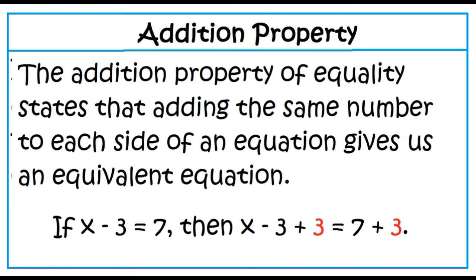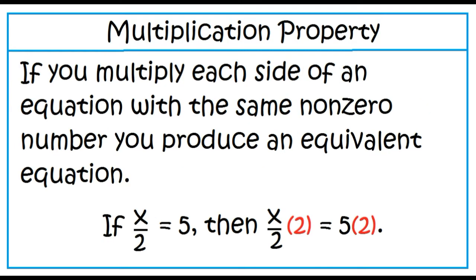The addition property of equality states that adding the same number to each side of an equation gives an equivalent equation. If x minus 3 equals 7, then x minus 3 plus 3 equals 7 plus 3. Multiplication property of equality: if you multiply each side of an equation by the same non-zero number, you produce an equivalent equation. If x over 2 equals 5, then x over 2 times 2 equals 5 times 2.